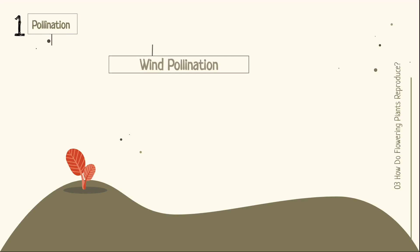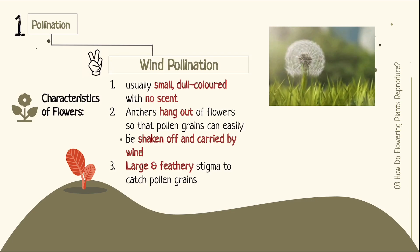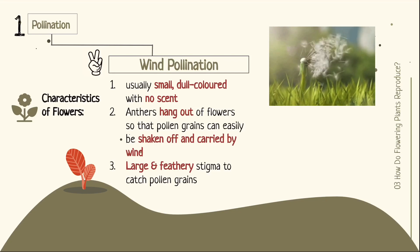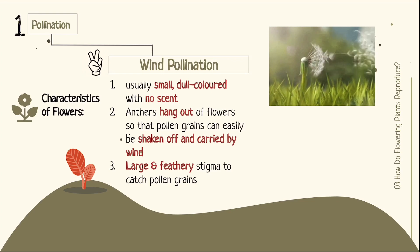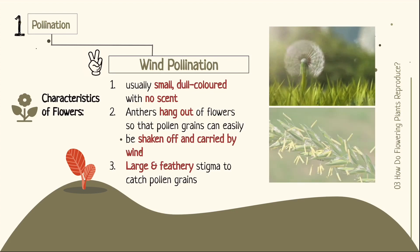Plants that go through wind pollination have flowers that are usually small, dull coloured, and have no scent. Their anthers hang out of the flowers so that pollen grains can easily be shaken off and carried away by wind to pollinate another flower of the same kind. Their stigma are large and feathery to catch pollen grains in the air.